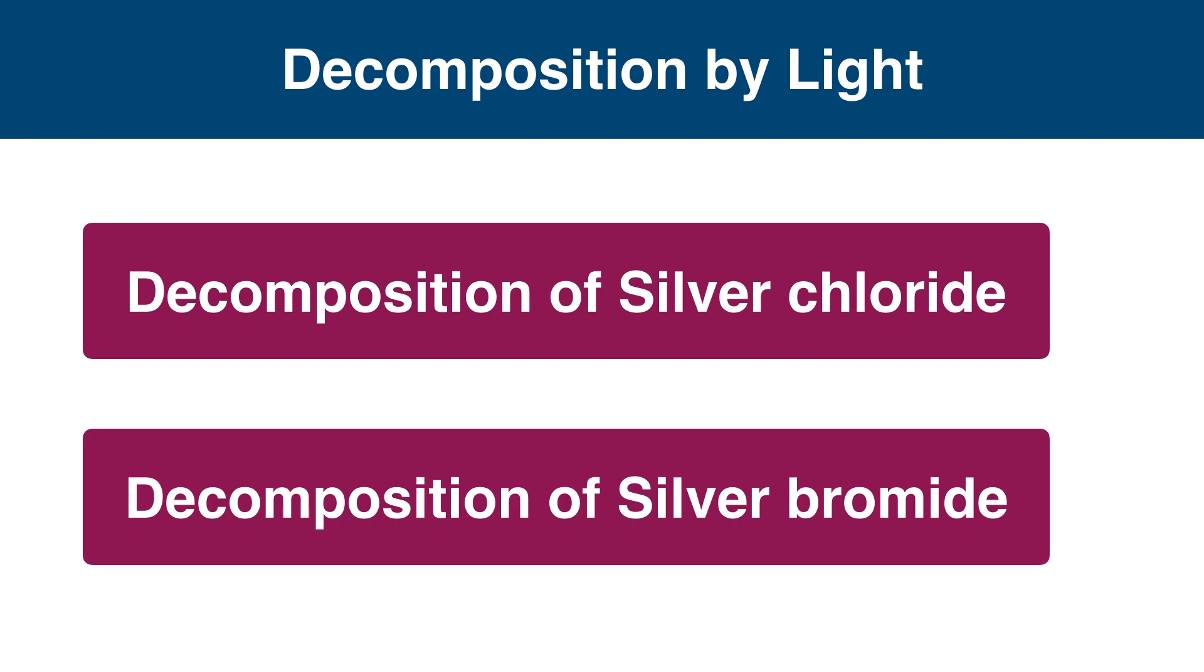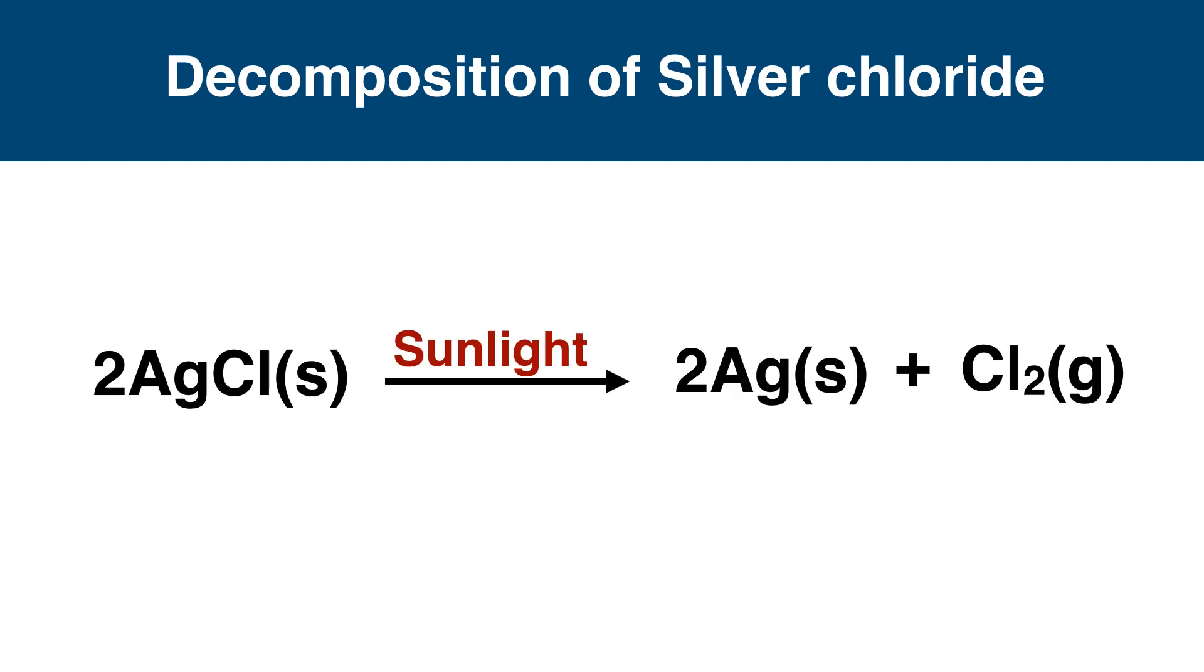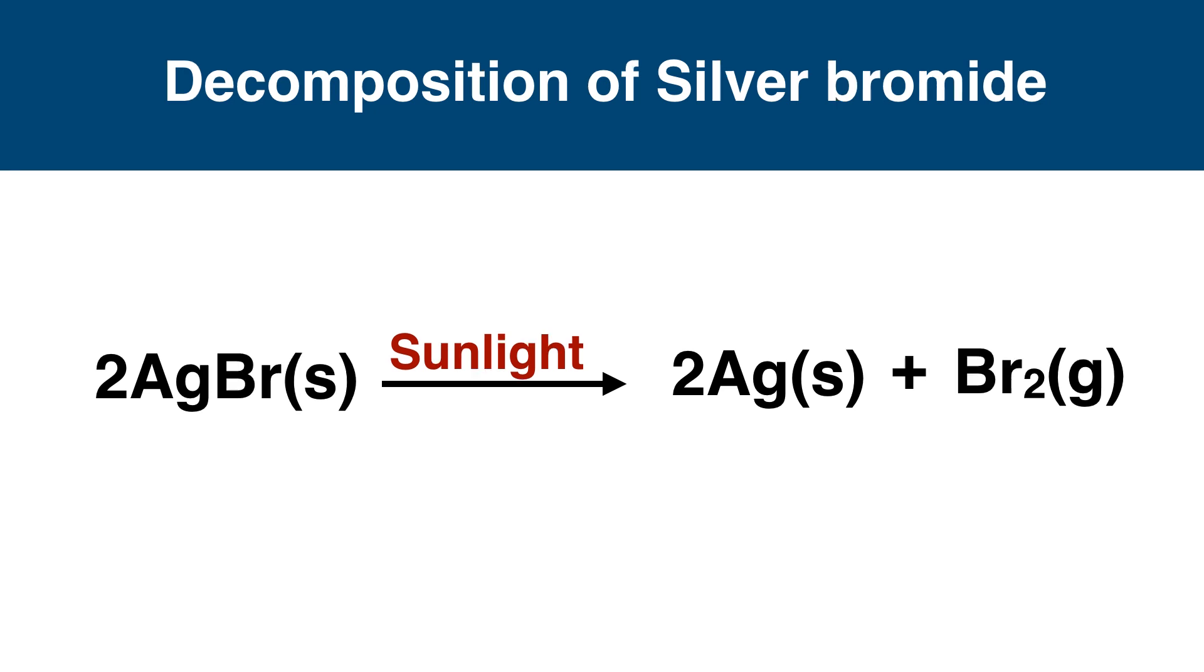Decomposition of silver chloride and decomposition of silver bromide: in decomposition of silver chloride, it decomposes to silver and chlorine in the presence of light. Decomposition of silver bromide is the same as decomposition of silver chloride - silver bromide decomposes to silver and bromine.